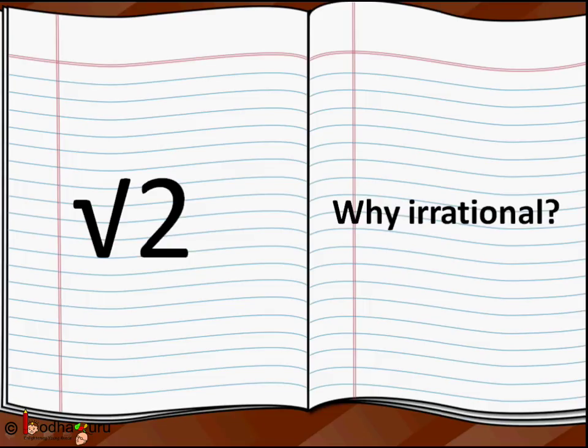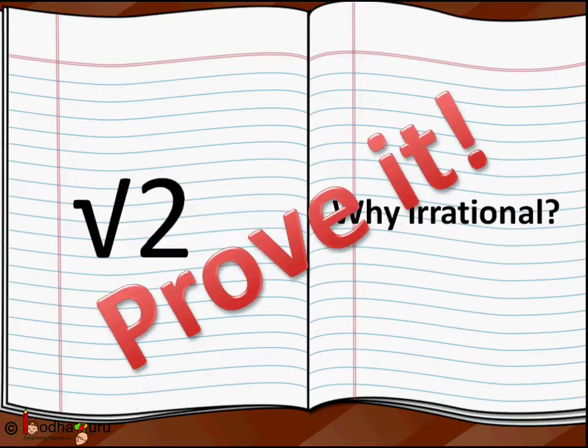Hello friends, we learned in our previous lessons that square root of 2 is an irrational number. If you are asked why, you would say it cannot be represented as a ratio of two integers, but how can you be so sure? Where is the proof?